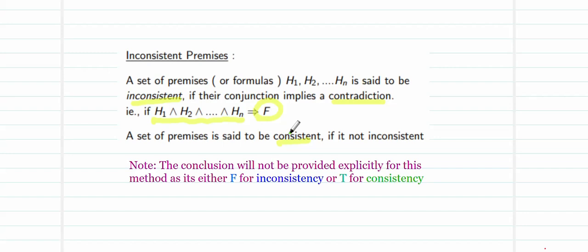In the remaining problems like the direct and indirect method, along with the hypothesis we also have a conclusion to arrive at. But in the inconsistency method, since it is known that the conclusion is either false when inconsistent or true if consistent, the conclusion will not be directly given in the question. When the conclusion is not explicitly present, check whether you have been asked to prove it is inconsistent or consistent and prove accordingly.